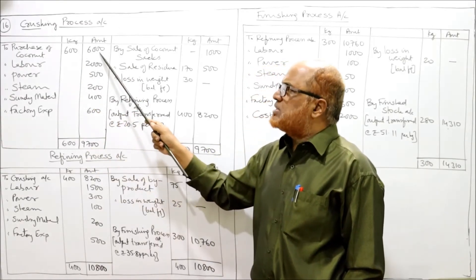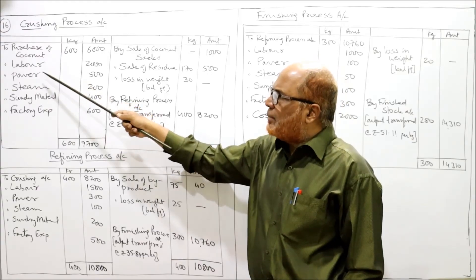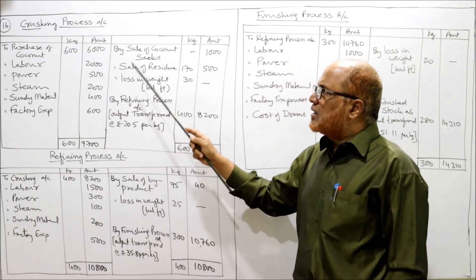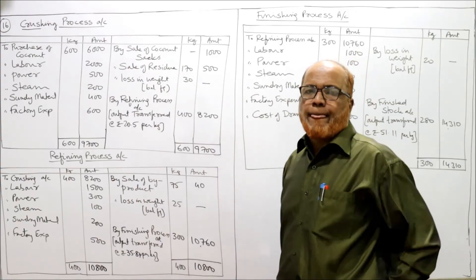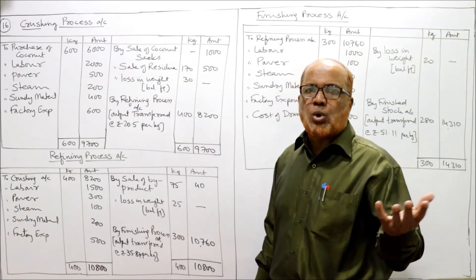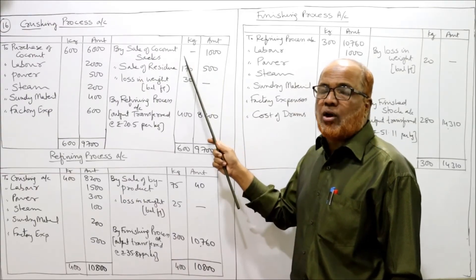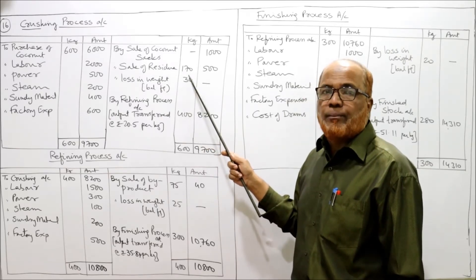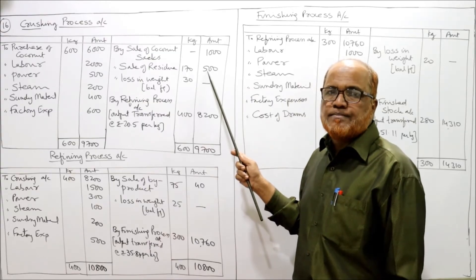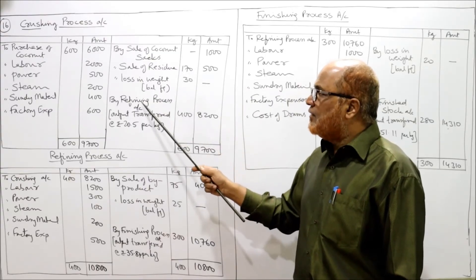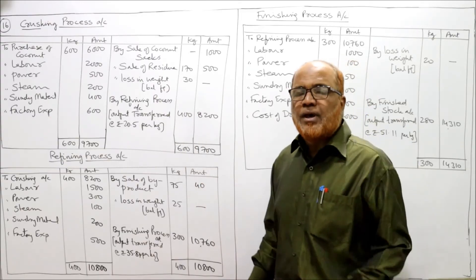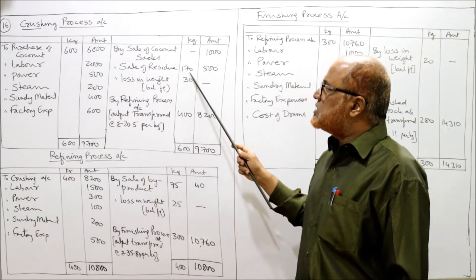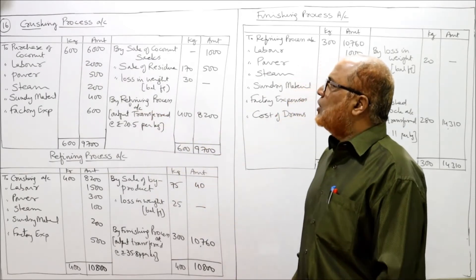Crushing process account — debit side: purchase of coconut 600 kilograms, rupees 6000, then labour, power, steam, sundry material, factory expenses. Credit side: sale of coconut sacks rupees 1000 — amount column only, no quantity — then sale of residue 170 kilograms, rupees 500. Output: refining process is given as 400 kilograms. Input is 600; 600 minus 170 should give 430, but the problem gives only 400.